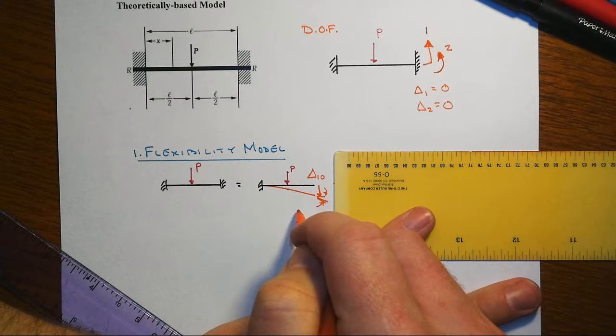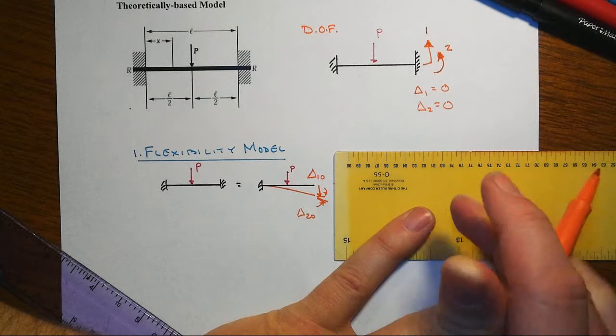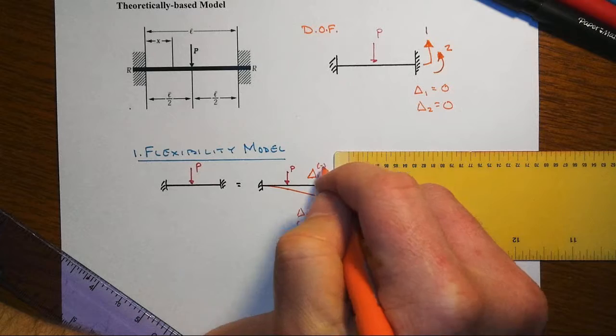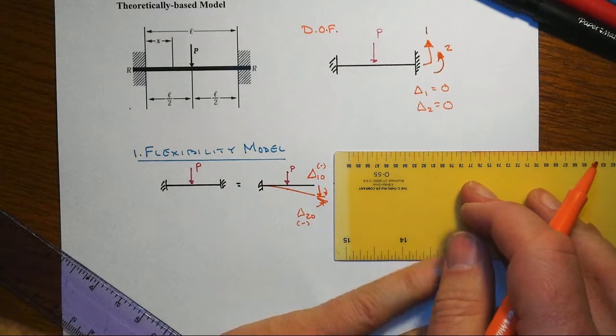And of course, the second displacement that happens would be delta two zero. In both cases, these will turn out to be ultimately negative signs because they're counter to our coordinate system.